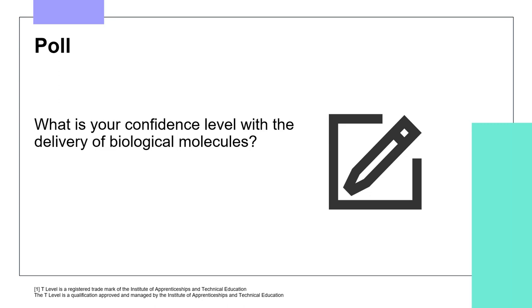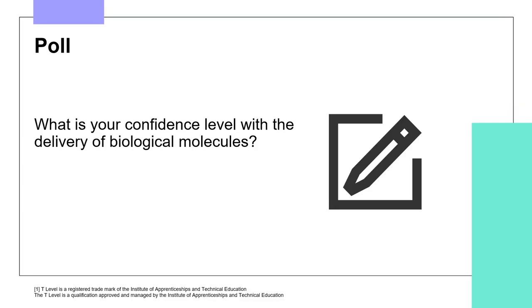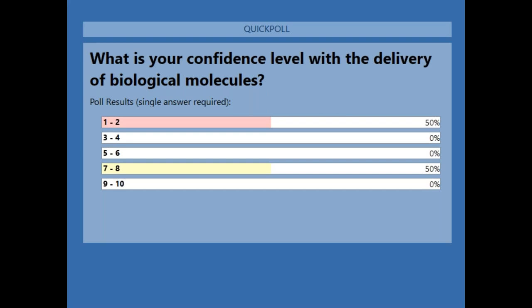With a 1 being little to no confidence and a 10 being very confident, you should see that poll on your screen now. It's very much a mixed bag — actually an even split, with 50% of you at 1 to 2 and the other half up at the 7 to 8 area. Hopefully we'll be able to help you today and make you feel a bit more confident with the delivery of this content.